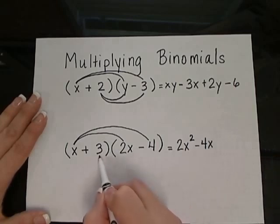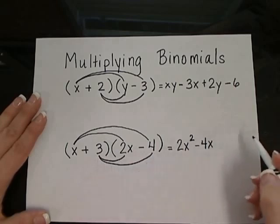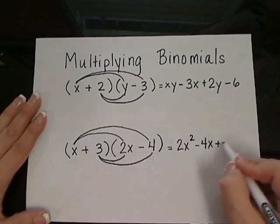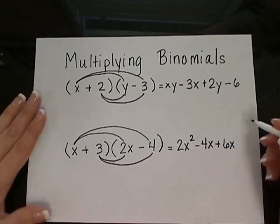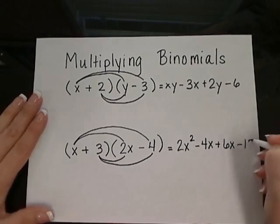Now we're ready to distribute the 3 to the 2x, as well as to the minus 4. So 3 times 2x would give me 6x, and 3 times negative 4 would give me negative 12.